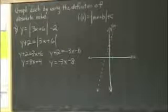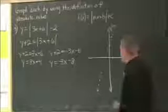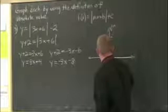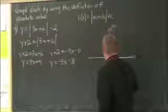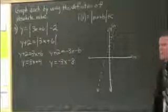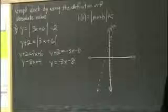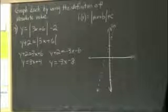Now I'm going to graph y equals negative 3x minus 8. That's got a y-intercept of negative 8, which is right here. Slope of negative 3. Well, negative 3 means I could go down 3, right 1.